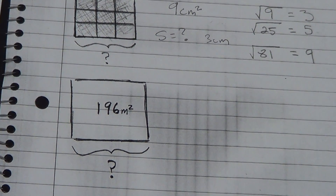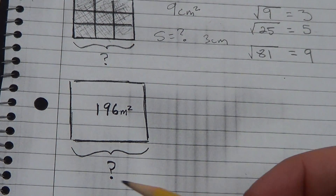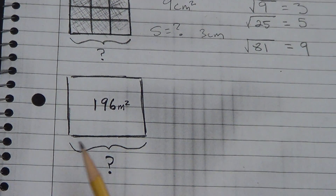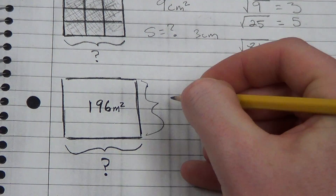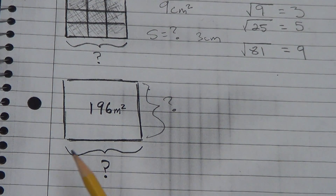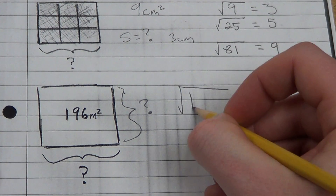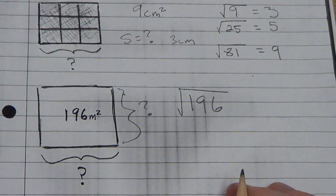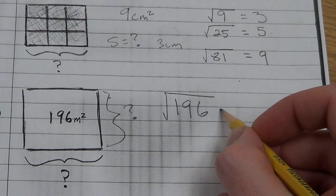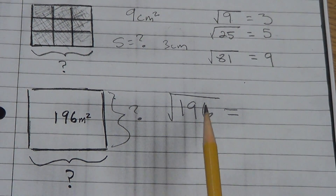Let's look at an example you might not know. Here I have a square that has an area of 196 meters squared, and I want to know what the side length is. I'm saying: if the area is 196 and I did side times side, what number times itself will equal 196? So I'm looking for the square root of 196. You might not know it, so you need to know how to find it on a calculator.